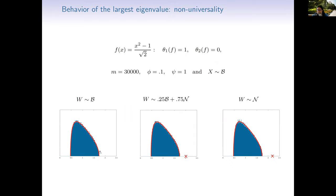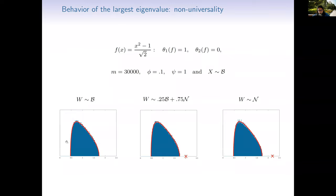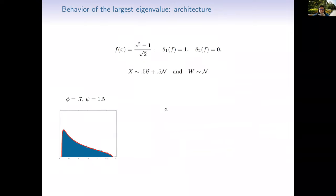The heavier the tail of the distribution, the further the outlier is from the bulk. This behavior is very non-linear: in linear models in random matrix theory, the position of the outlier is usually universal — its existence and position are universal, and only the fluctuations can be non-universal. Here, even the existence and position are non-universal because they depend on the distribution of W, while x is fixed. This observation was made in an earlier paper, though without a mathematical explanation for why the outlier appears.